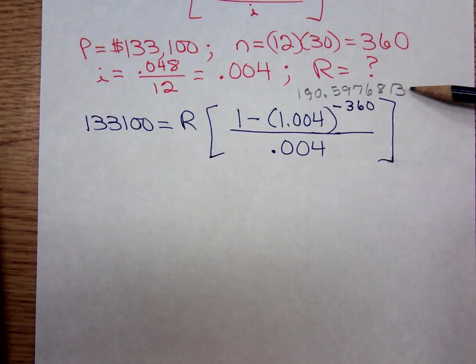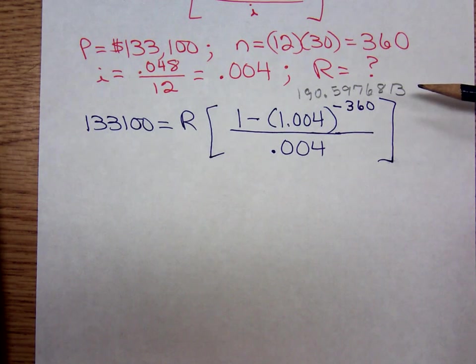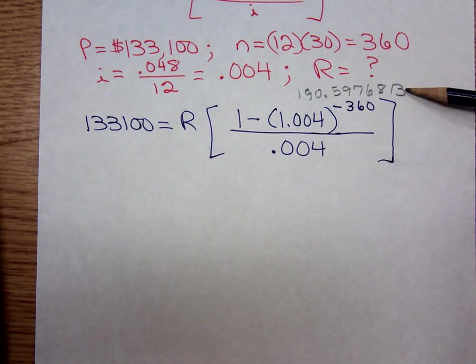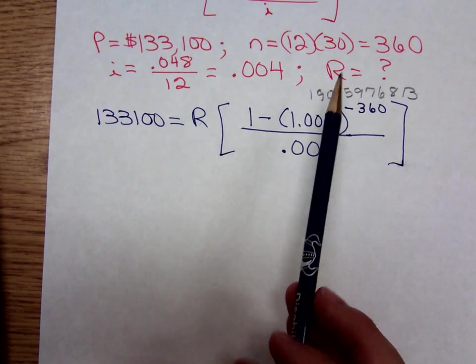All the remaining payments, which would have amounted to about 170 payments, were nothing more than just interest. That's the significance of that bracket amount. Now it's R times 190 point something.